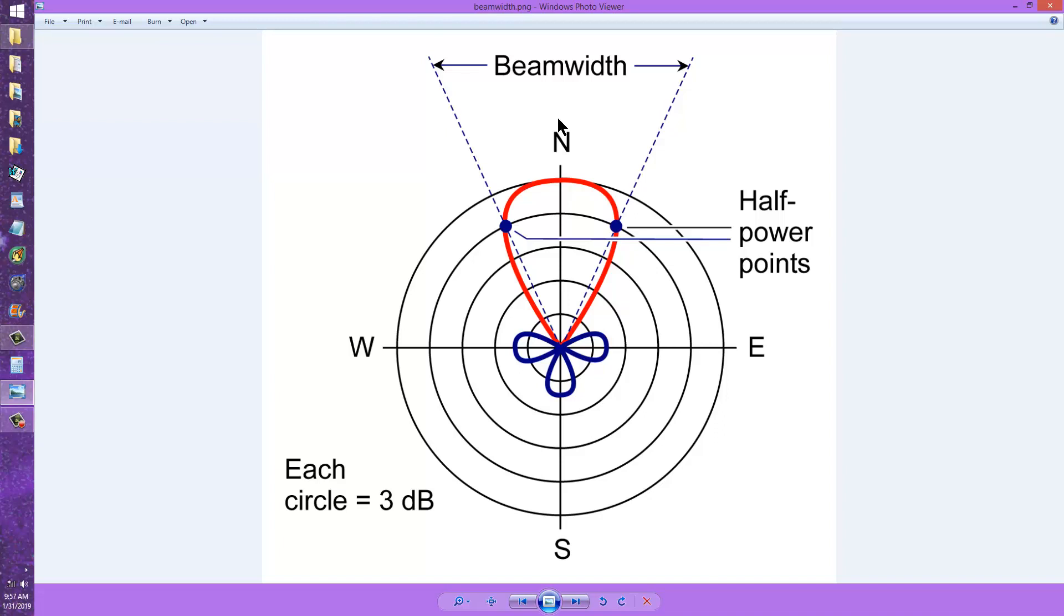In general, the more elements you add to a Yagi or quad, usually in the form of directors in front of the main element, the sharper the directional pattern will be, and the narrower the beam width will get.